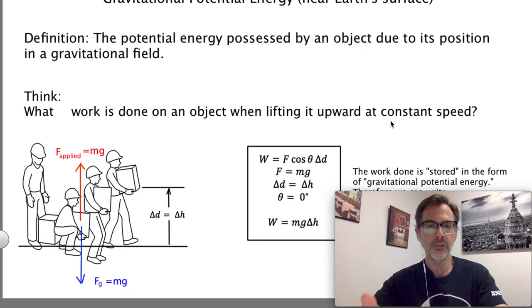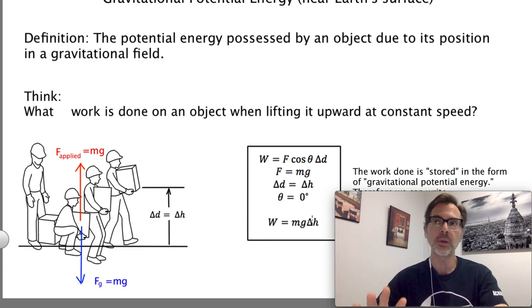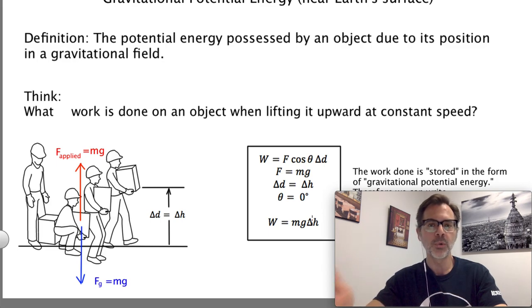As long as you don't raise something so high that the value of little g changes, we have what's called a constant gravitational field. In that case, the work we do is given by the formula mg delta H, and all of that is explained in the instructional video. You might be wondering what happens if we raise something so high that little g actually changes. We're going to talk about that in Chapter 6, so don't worry about it for now. Right now we're staying near the Earth's surface.